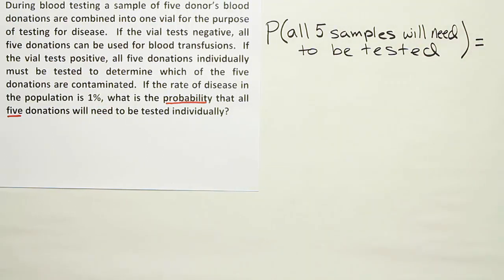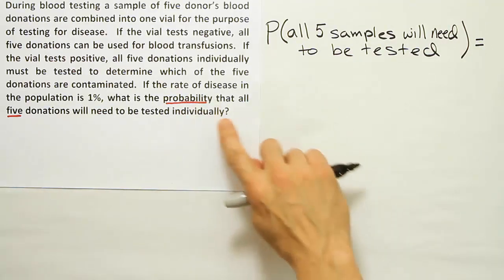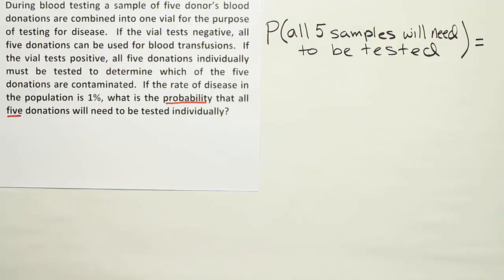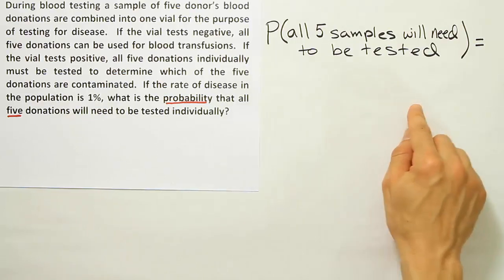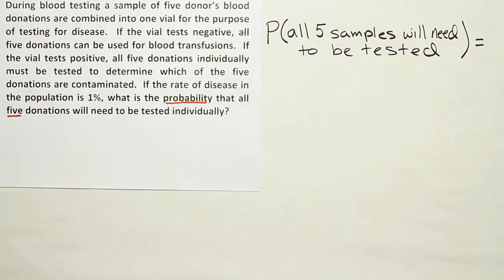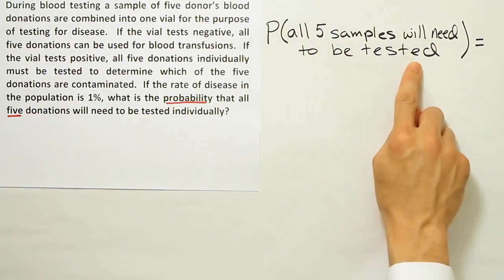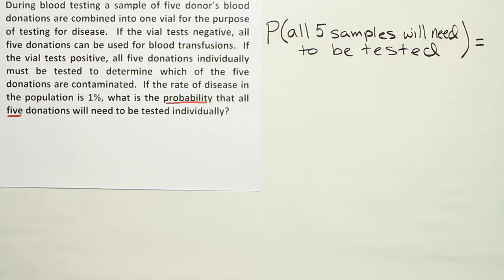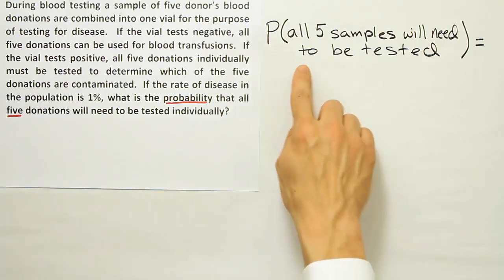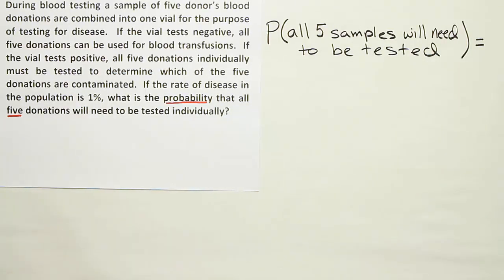When I read this problem, it's kind of devoid of great keywords — it doesn't really give me much to work with. I know it's a probability problem and we're looking at five samples, so probably we'll have some multiplication rule nestled in somewhere. But if I just put five spaces and try to work it out that way, it won't work, because I'm not really clear on what 'all five samples will need to be tested' means. I should think about that a little more and try to express it in a more helpful way.